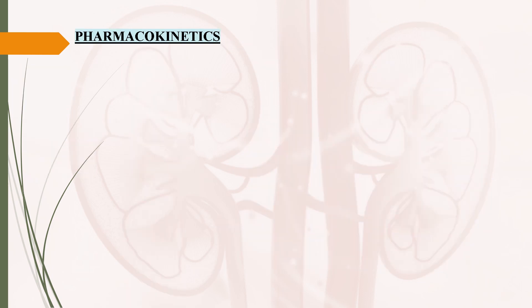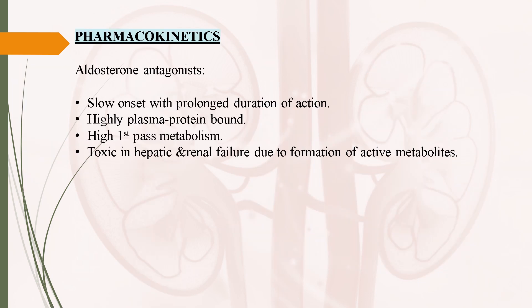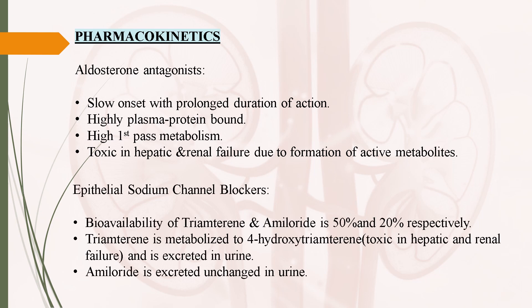Coming to pharmacokinetics of aldosterone antagonists: these drugs have a slow onset with prolonged duration of action. They are highly plasma protein bound and have high first-pass metabolism. These drugs are toxic in hepatic and renal failure due to formation of active metabolites.